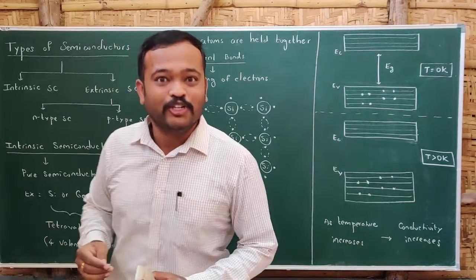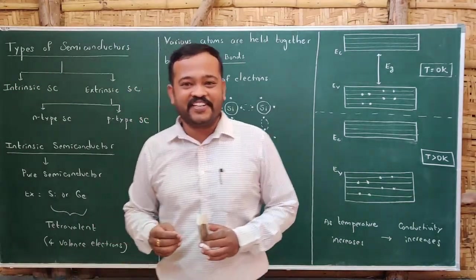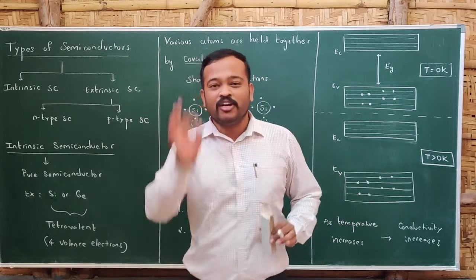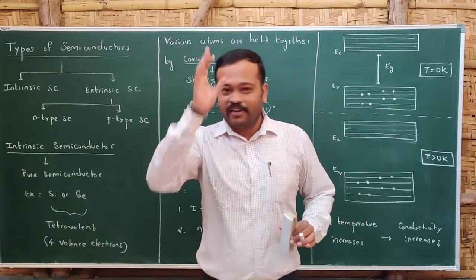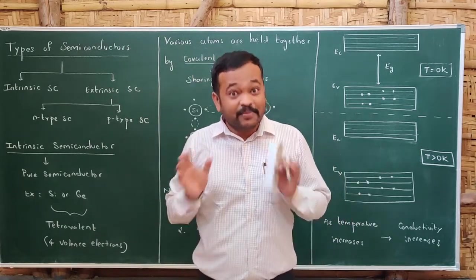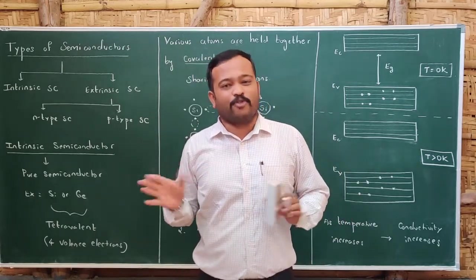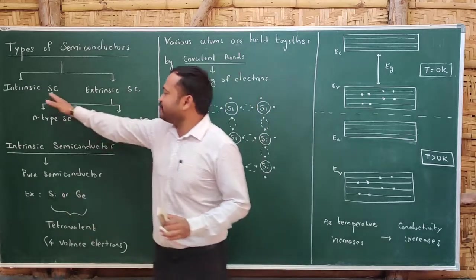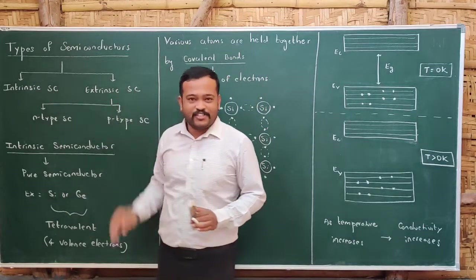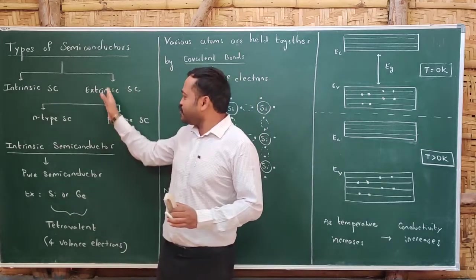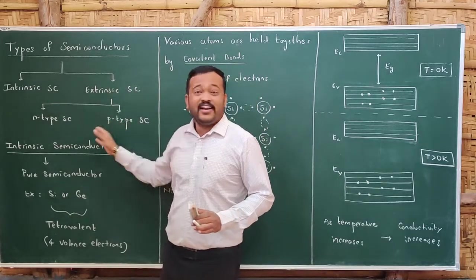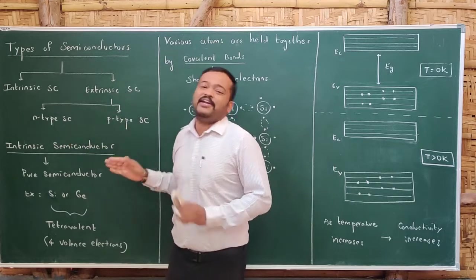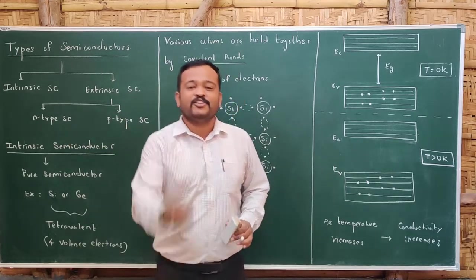Welcome to part 2 of semiconductors. In this session, we will be studying about types of semiconductors. Semiconductors are broadly classified into two types: intrinsic semiconductor and extrinsic semiconductor. Extrinsic semiconductors are again classified into two types: N-type and P-type semiconductors.